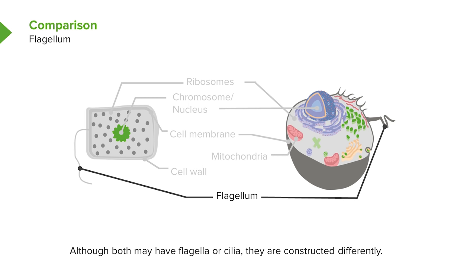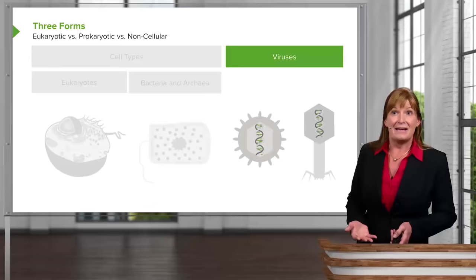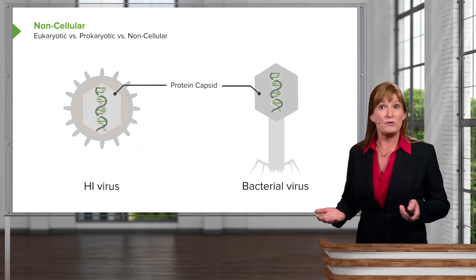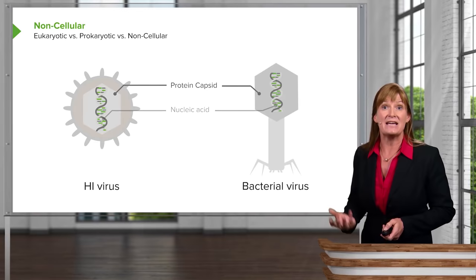In general, a eukaryotic cell is about 10 times larger than a prokaryotic cell. We'll also be visiting viruses and prions briefly. Viruses are technically non-living. They're composed of a protein capsid — a protein outer coat — with a nucleic acid or DNA core, sometimes an RNA core in the case of retroviruses.